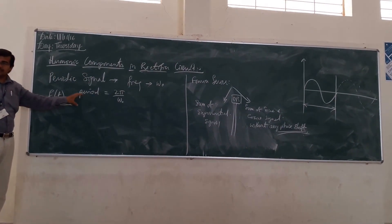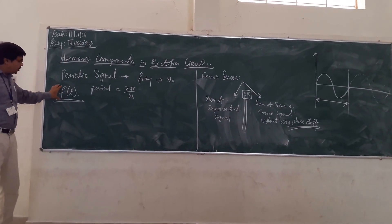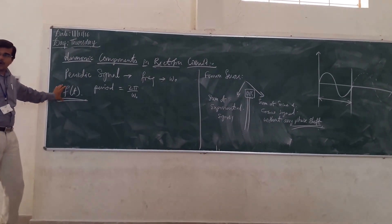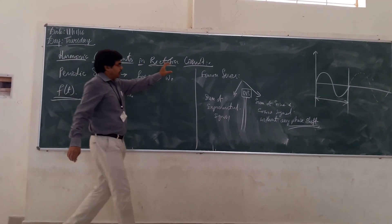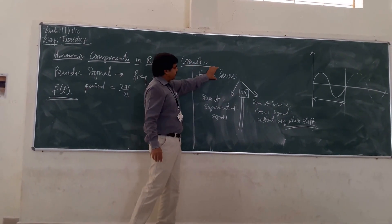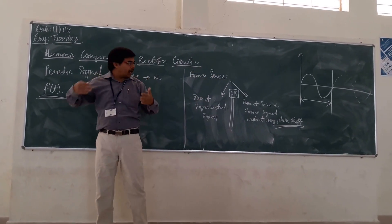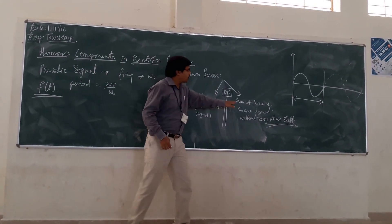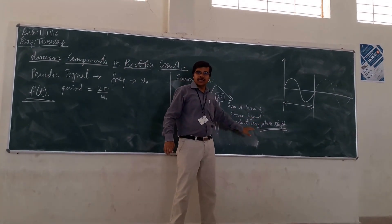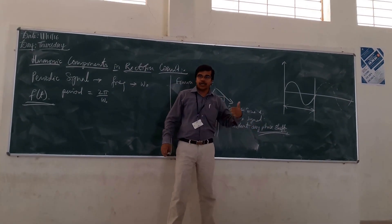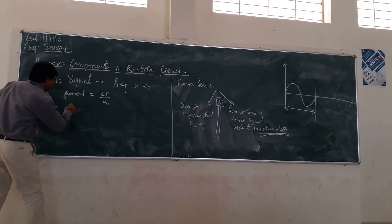If all these conditions are there, we can say that we can decompose this signal using the Fourier series into a sum of sine and cosine signals. Now let us proceed with some example.